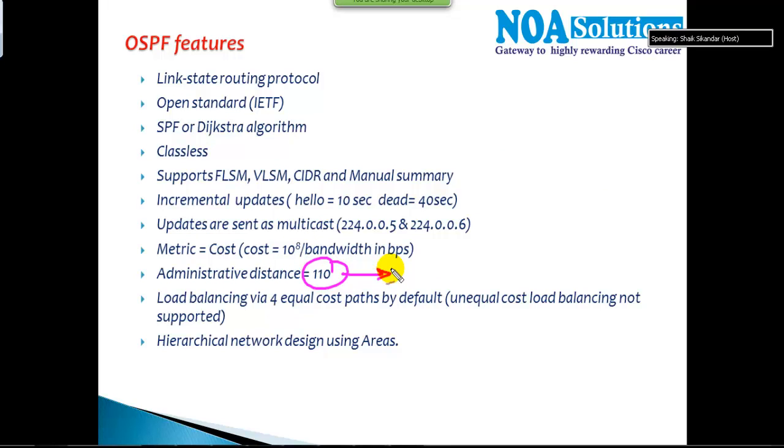EIGRP is the only protocol which supports unequal cost load balancing. Unlike EIGRP, OSPF supports only equal cost load balancing, which means if both routes—let's say you got three routes.